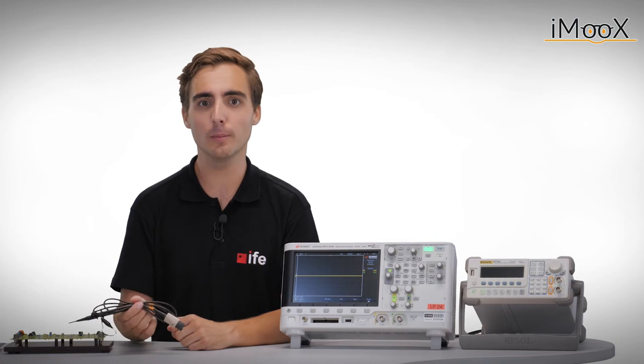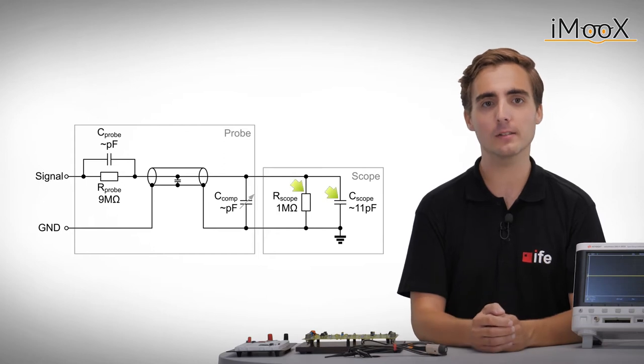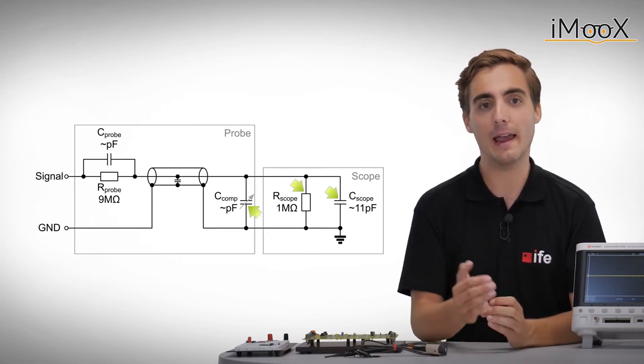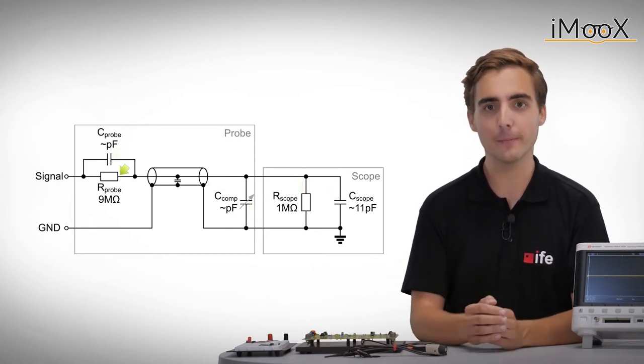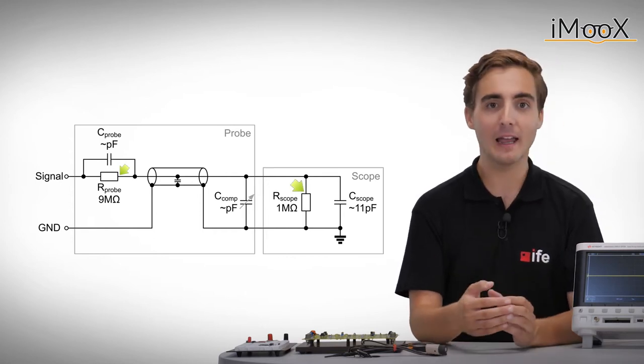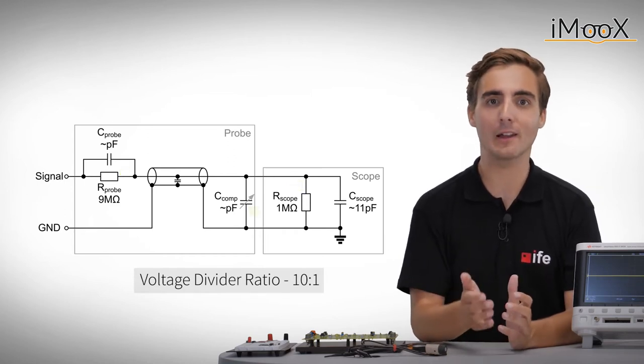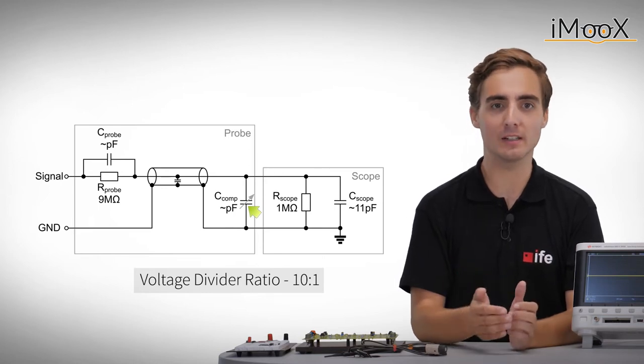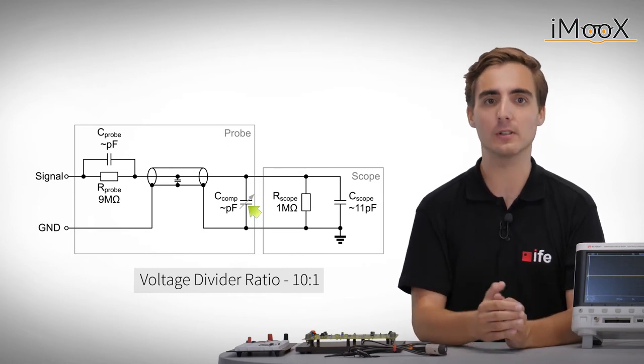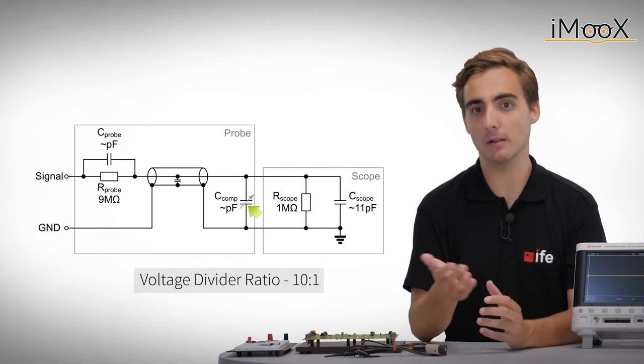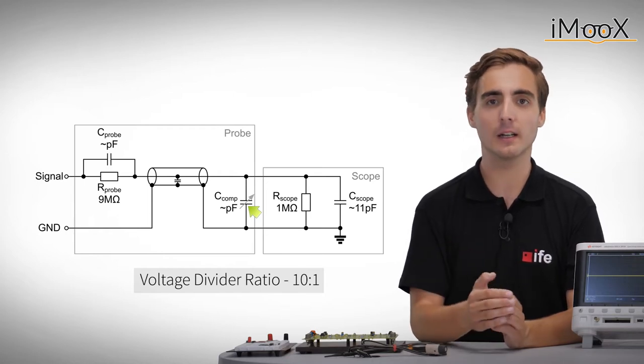A typical schematic of such a probe could look like this. We can see the scope channel input impedance, a compensation capacitance, and a probe input impedance. You can see that the 9 Mega Ohm resistor of the probe and the 1 Mega Ohm resistor of the scope act as a voltage divider of 10 to 1 for DC. The voltage probe offers a compensation capacitor which needs to be adjusted accordingly, so that this ratio of 10 to 1 is maintained over a broader frequency range. Depending on the scope and the probe, this ratio of 10 to 1 is either set automatically by the scope or has to be changed manually in a channel menu.